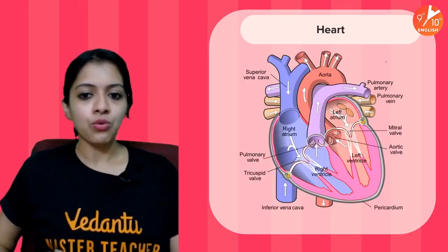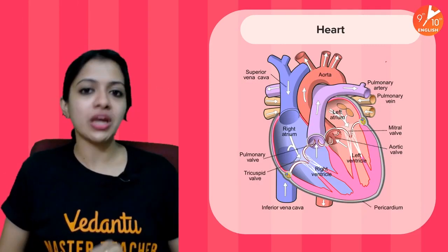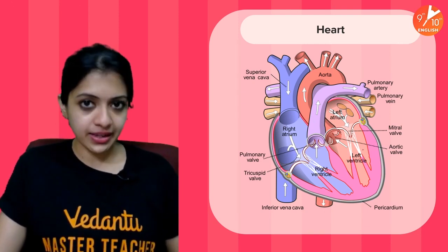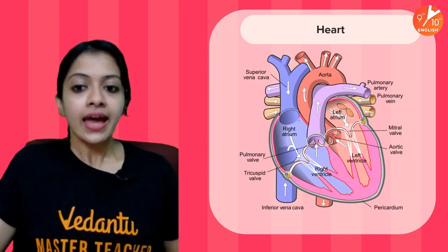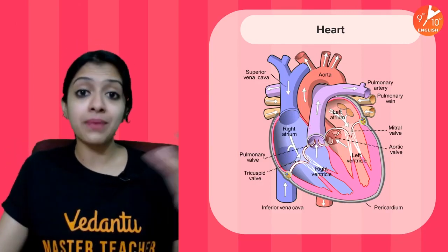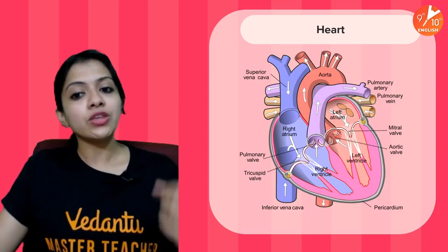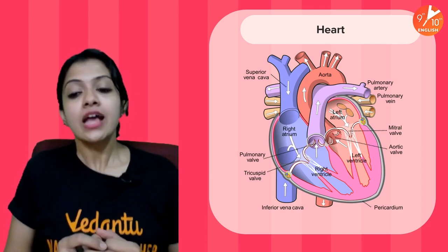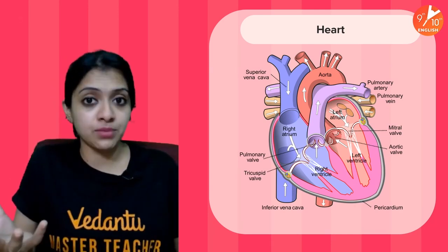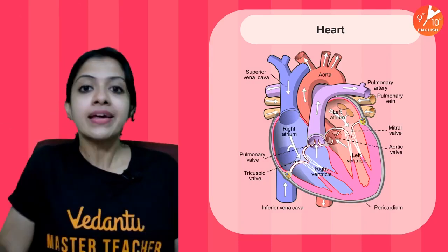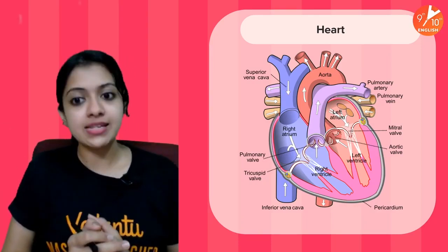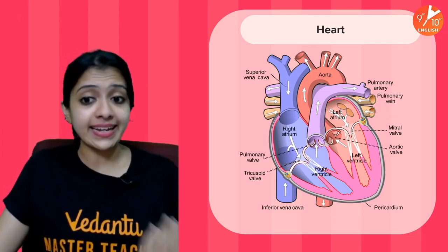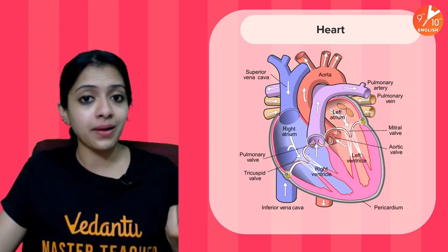Our heart has four chambers: the right atrium, the left atrium, the right ventricle, and the left ventricle — upper atria and lower ventricles. The heart constantly contracts and relaxes, which is how it gets filled with blood and pumps it out to different parts of the body. The left side of the heart mainly deals with oxygenated blood, and the right side mainly deals with deoxygenated blood.